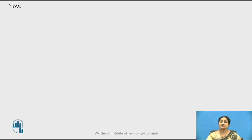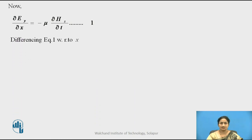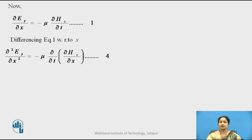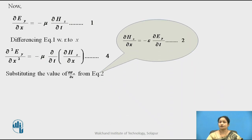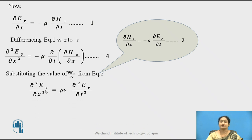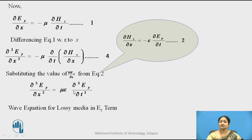Similarly, considering equation 1 and differentiating with respect to x, we obtain equation 4. Substituting the value of ∂Hz/∂x from equation 2, which equals minus epsilon * ∂Ey/∂t, equation 4 reduces to: ∂²Ey/∂x² is equal to mu*epsilon * ∂²Ey/∂t². Since this equation is in terms of Ey on both sides, this is the wave equation for a lossless media in the Ey term.